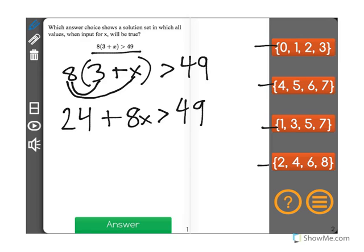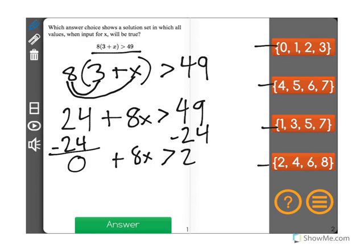Now what I'm going to do is I'm going to treat this just like an equation, and I'm going to try to isolate x. So the first thing I'll do is subtract 24 from both sides, which gives me 0 plus 8x is greater than 25.